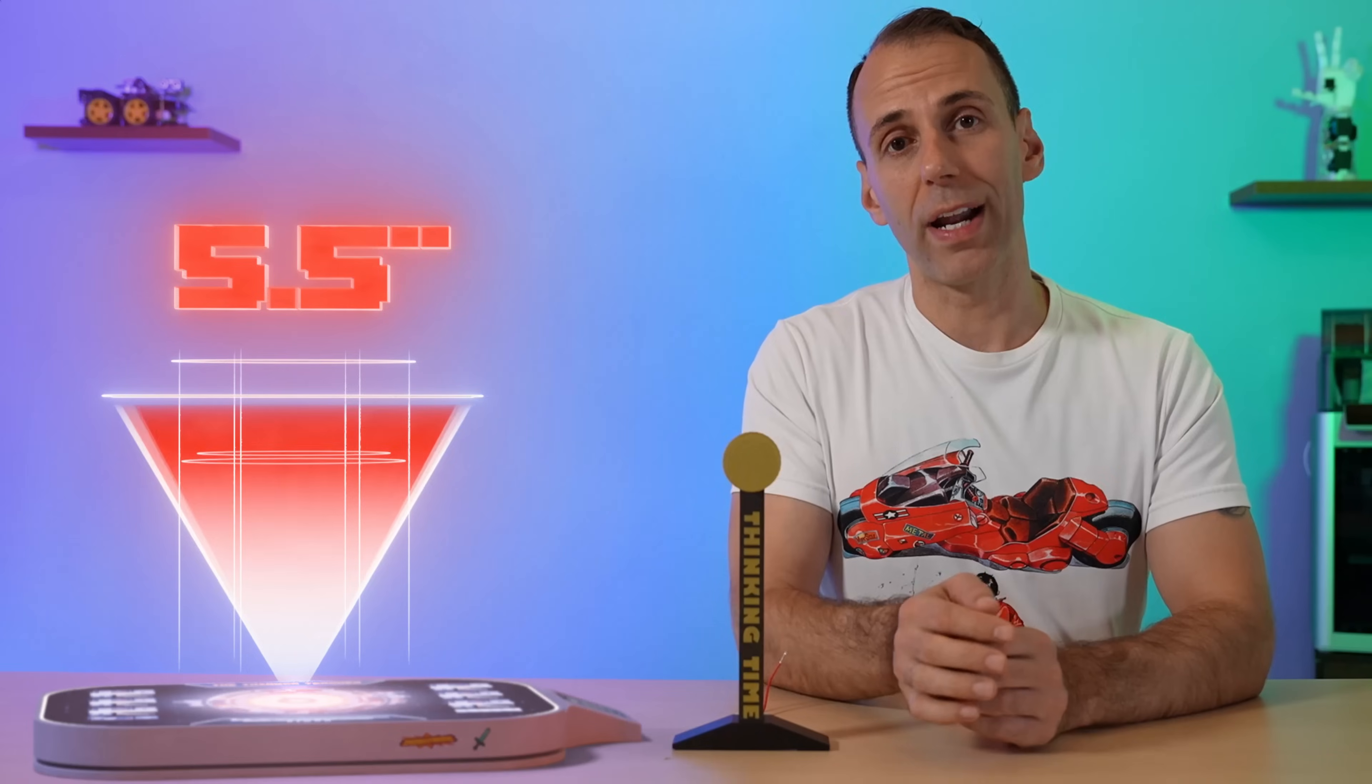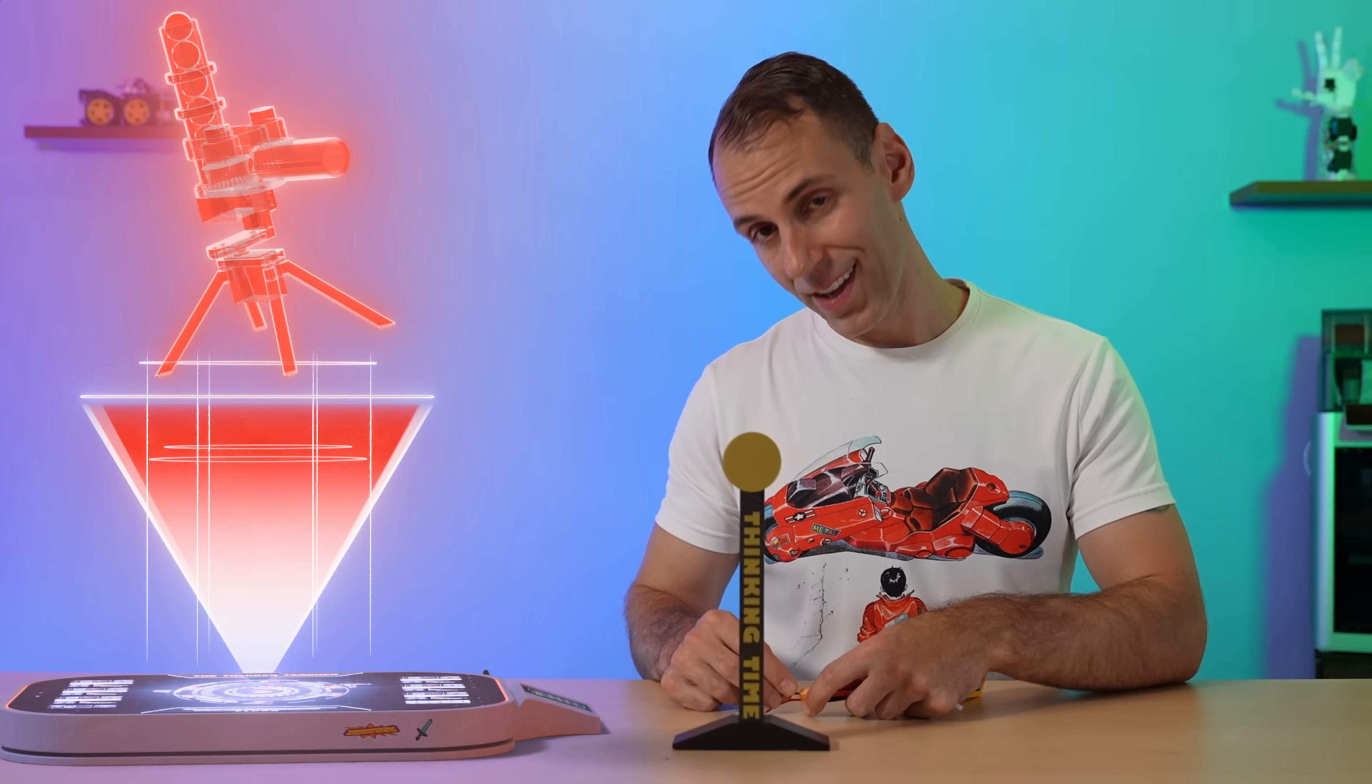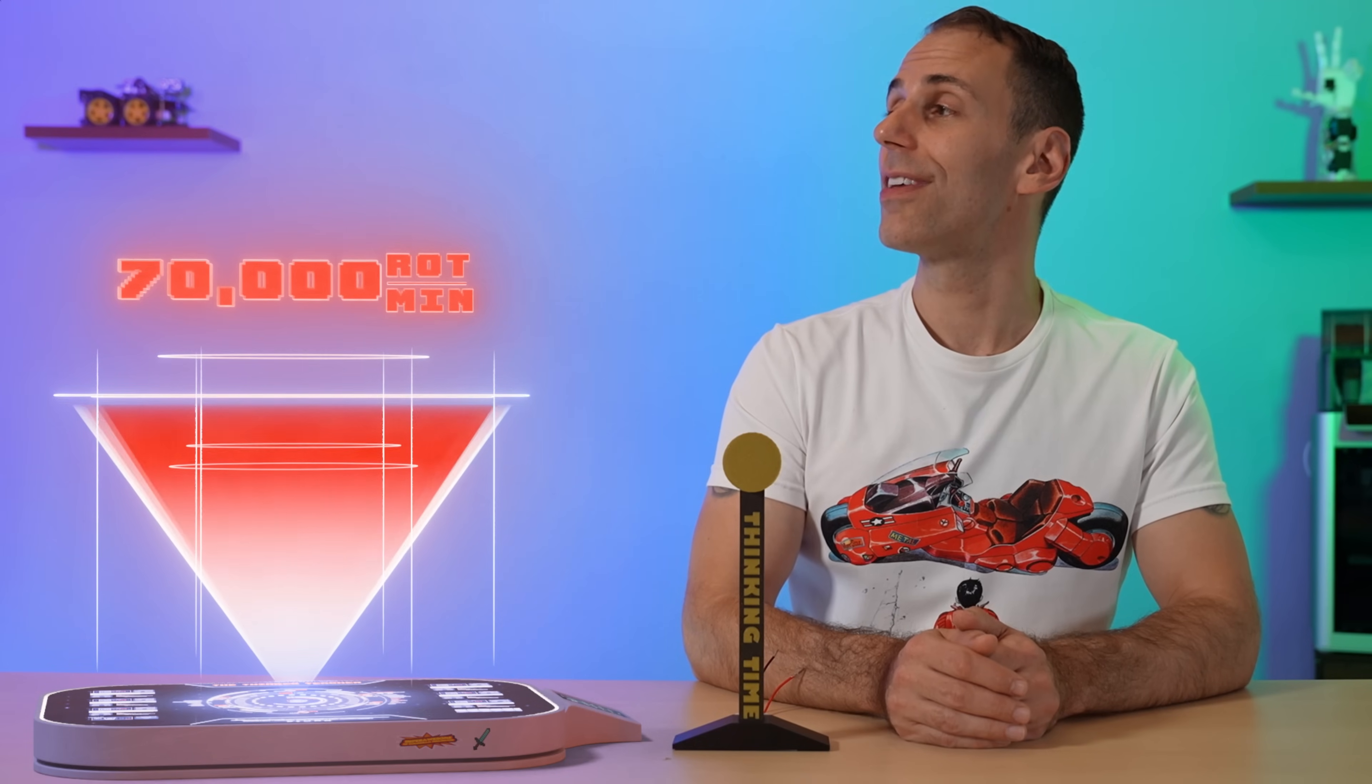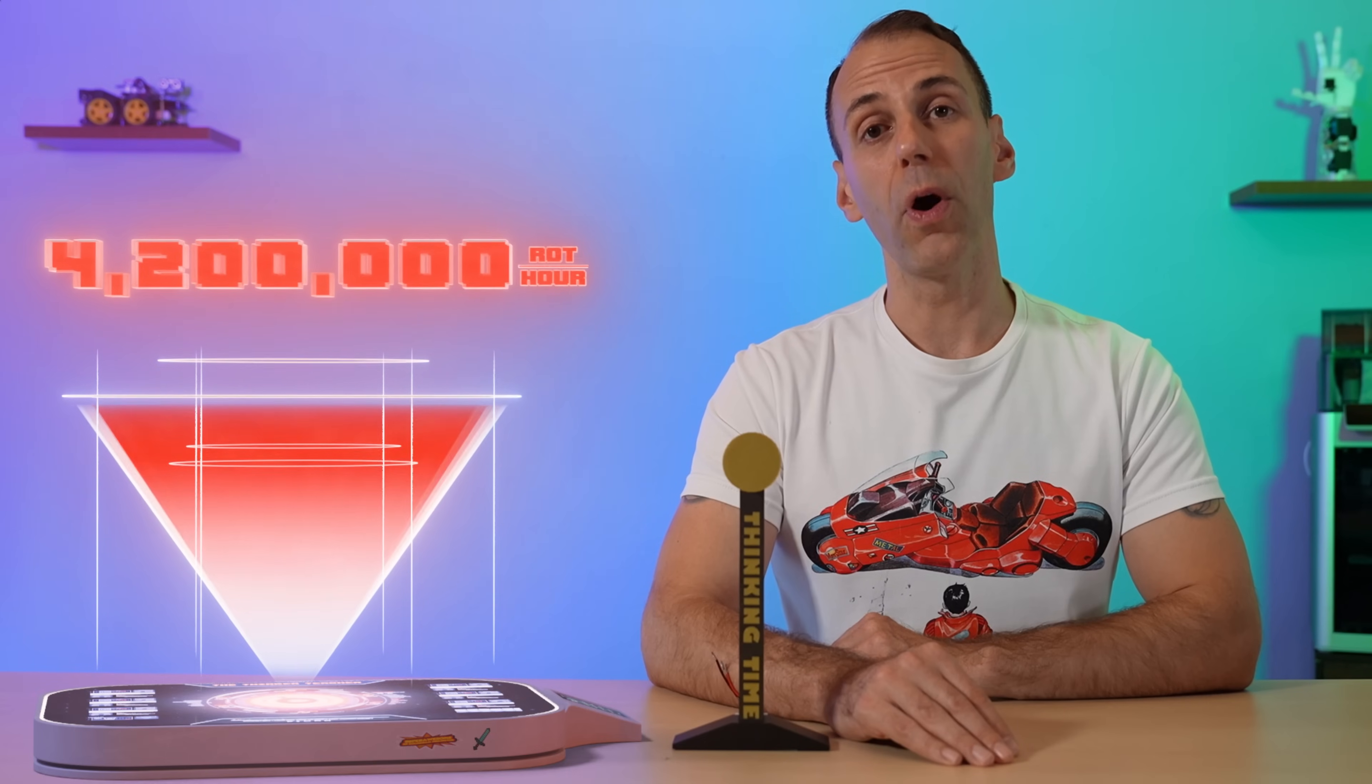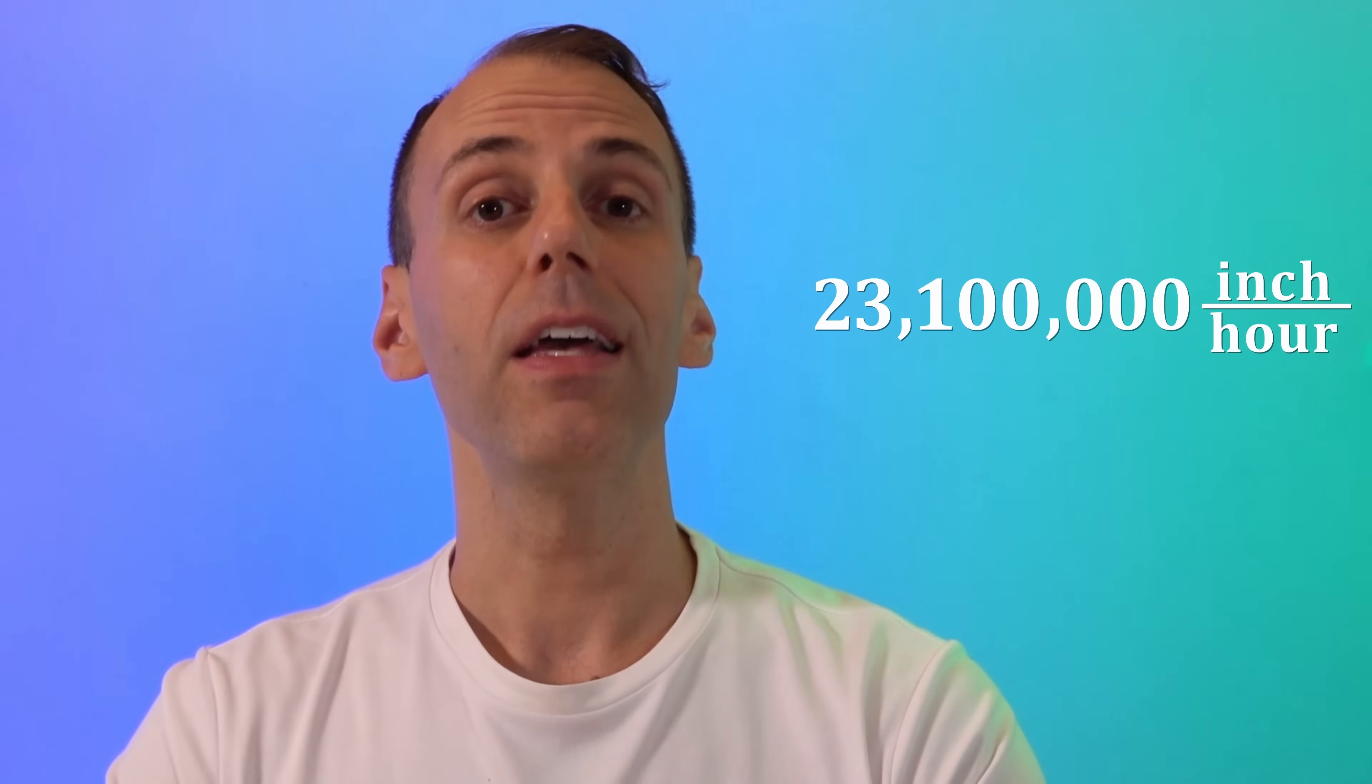These motors in my turret have a maximum velocity of 70,000 rotations per minute. To make things simpler, I'm going to convert that to rotations per hour. To do this, I simply multiply 70,000 rotations per minute by 60 minutes over one hour, and get that there are 4,200,000 rotations in one hour. That's a lot of rotations. To convert this rotational speed to linear speed, we simply multiply 4.2 million rotations per hour by 5.5 inches per rotation to get a linear speed of 23.1 million inches per hour.